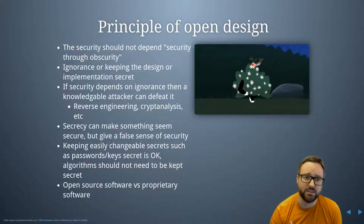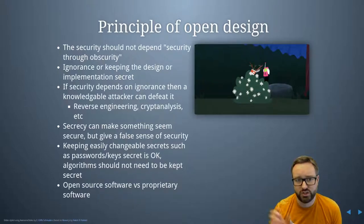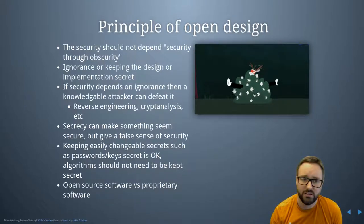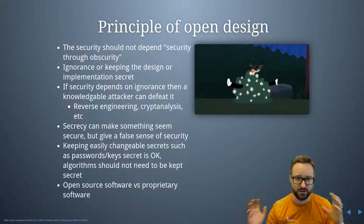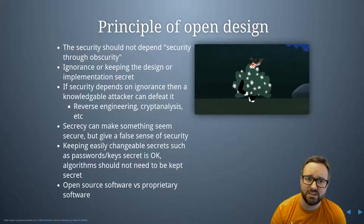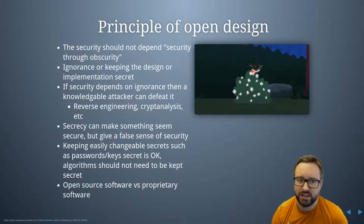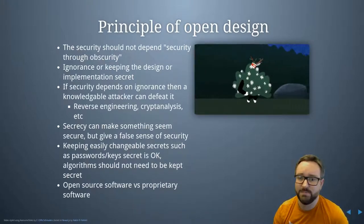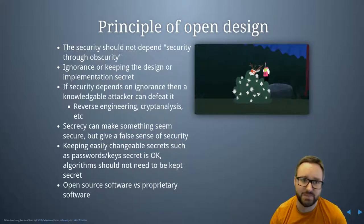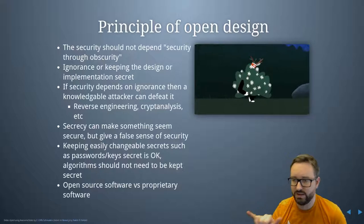Consider the Caesar cipher, which just shifts all characters along a couple of places. As soon as someone finds out that's how your encryption works, the whole thing falls apart. If you see some encrypted text and don't know anything about it, you might think it looks very secure. But as soon as someone explains how it works, you can decrypt any message — even just by brute-forcing the key space of 26 shifts.